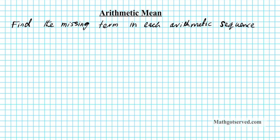For number one we have a sequence with four terms: 19, dash, dash, 4. Arithmetic mean refers to non-consecutive terms between two terms in an arithmetic sequence. In this case we have two arithmetic means, which are the numbers represented by these blanks. So we are basically looking for those two arithmetic means.